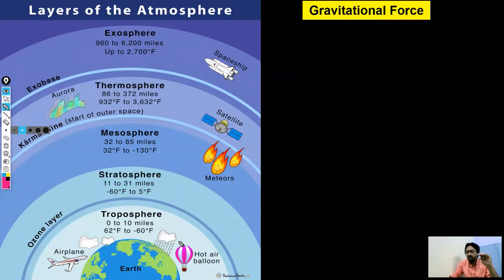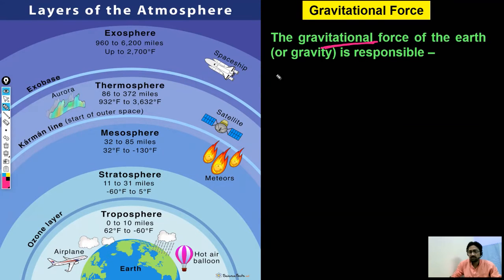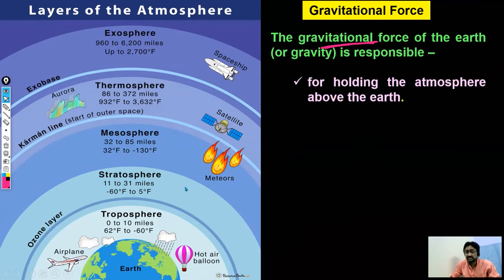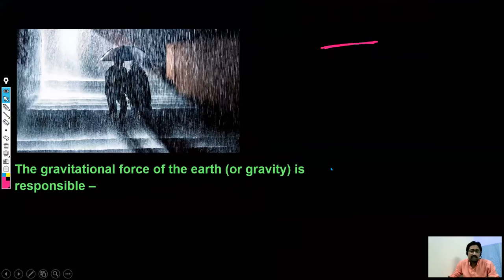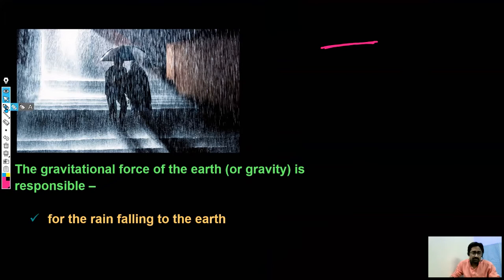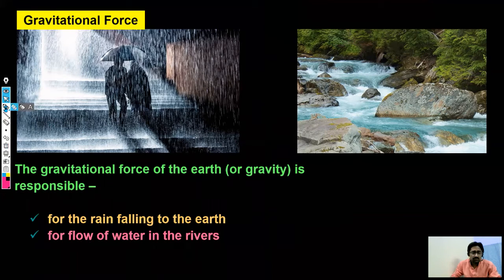We all know that around the earth we are completely surrounded by atmosphere. Because of this gravitational force, all these layers of atmosphere are around the earth. So we can say gravitational force is responsible for holding the atmosphere above the earth. This gravitational force of the earth is also responsible for rain falling to the earth, and the water flowing in rivers is also because of the gravitational force of the earth.